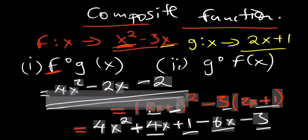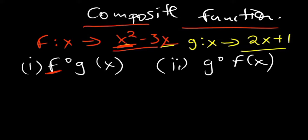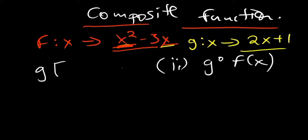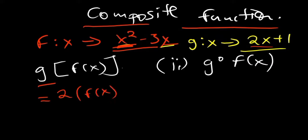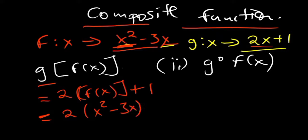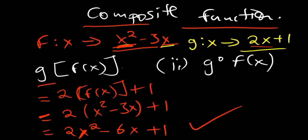Now find g(f(x)). You start with g, and at every point where you have x, you plug in f(x). So it becomes 2·f(x) + 1. Since f(x) = x² - 3x, this gives 2(x² - 3x) + 1, which simplifies to 2x² - 6x + 1. That is the composite function g of f of x.